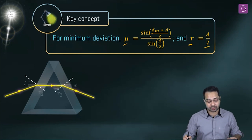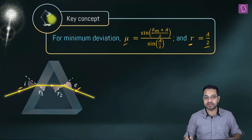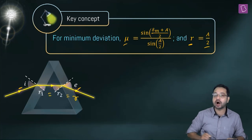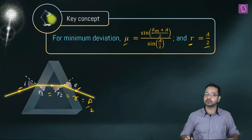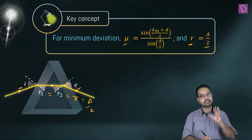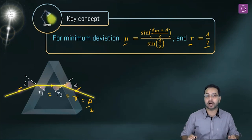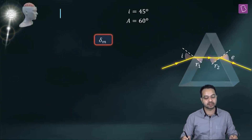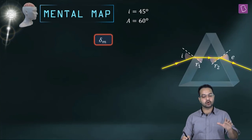For minimum deviation, the angle of incidence equals the angle of emergence, and r1 = r2 = r = A/2. These are the concepts we need. Now let's create a mental map: what do we need to calculate? We need to calculate δ_m.